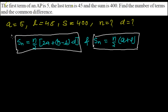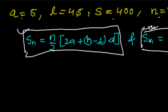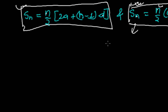If we use the first formula directly, we cannot find both d and n at once since neither is given. But if we use the second formula first — where a, l, and S_n are all known — we can find n. Once we have n, we substitute it into the first formula to calculate d.